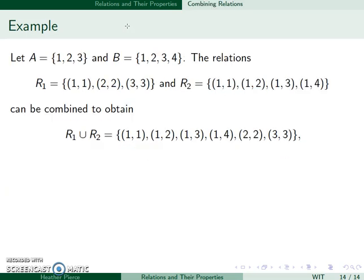I can also combine relations. So for example, I have R1 be equal to 1,1, 2,2, 3,3 and R2 be 1,1, 1,2, 1,3 and 1,4. I can take the union which just combines the sets. I can take the intersection and look at which points they have in common.